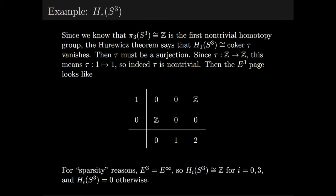Therefore, H_i of S³ is Z for i equals 0 and 3, and H_i of S³ is 0 otherwise. Then since we have the E^∞ page here, we can look along each diagonal corresponding to p+q equals i. For i equals 0, there's only one entry along that diagonal, and it's just the entry in (0,0). Since that's the only one, that must be the entire homology in dimension 0, as expected, since S³ is connected.